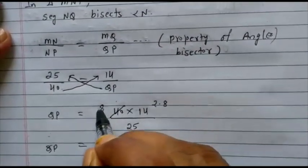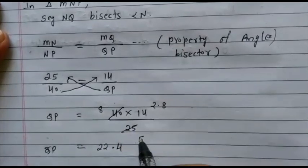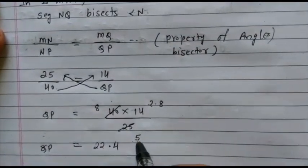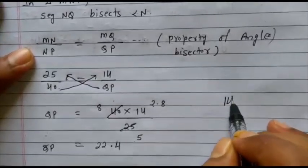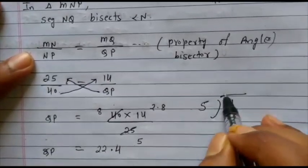Now, cancel out. 5 times 8 is 40, 5 times 5 is 25. Next, from the 5 table, divide 14. So, how to divide? See here, 14 divided by 5. So, what we get?